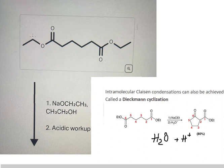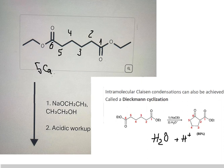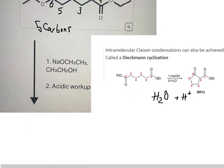Now we need to count from this location to this location. We can see that we have one, two, three, four, five, and six — similar to the PowerPoint. In this case, from number two to number six, that is five carbons. They will create a cyclopentane, so it should look like this.